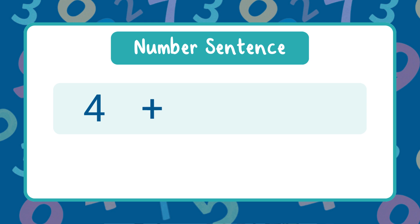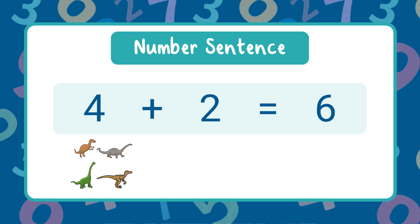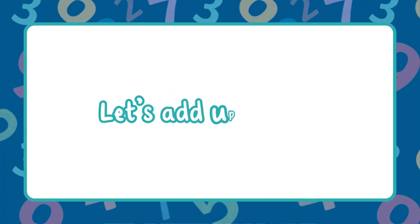So we use the plus sign, then we add the number two because that's how many more dinosaurs joined. The numbers four and two are called addends. Next we need to solve the problem, so we use the equal sign. When we add all the dinosaurs together we get six, and the answer we get when we add is called the sum. The number sentence shows that four plus two more equals six in all.